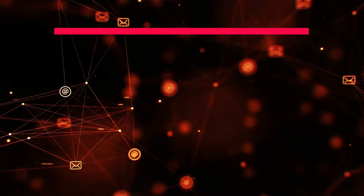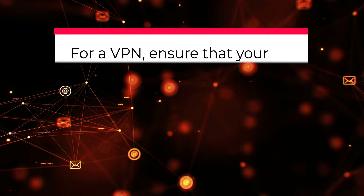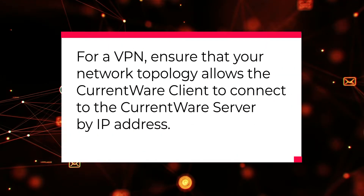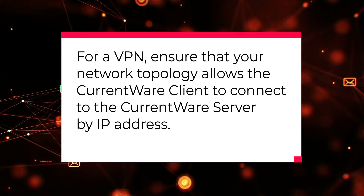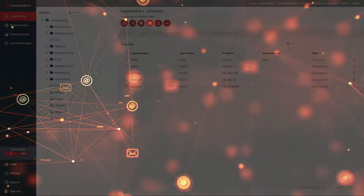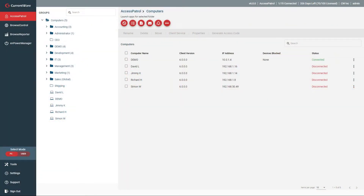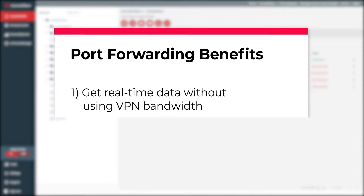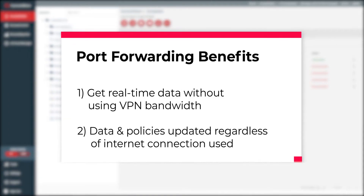To use a VPN in this way, you'll need to ensure that your network topology allows the CurrentWare client to connect to the CurrentWare server by IP address. The key advantage of using port forwarding over a VPN is that you can get real-time computer activity data from your remote workers without straining your VPN's bandwidth. This is ideal for remote teams that struggle with bandwidth overload when all of their employees are connected to the VPN simultaneously.